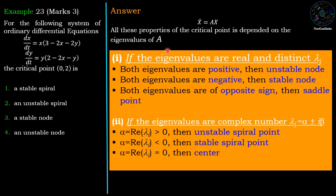If the eigenvalues of A are complex conjugates and the real part is positive, it is an unstable spiral point. If the real part is negative, it is a stable spiral point, and if the real part is zero, it is called a center. This classification applies to the linear system x' = Ax.